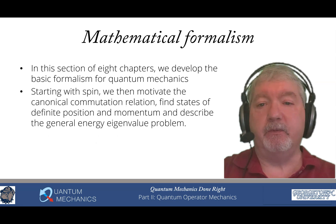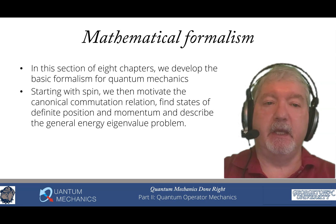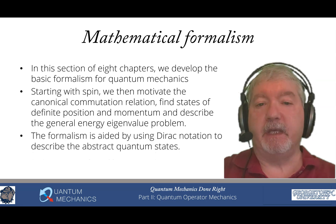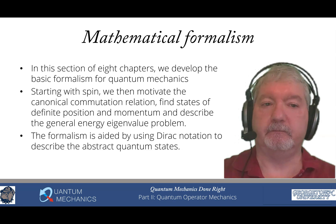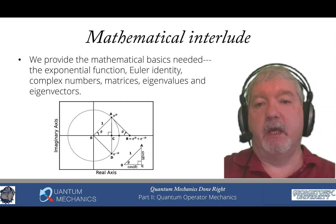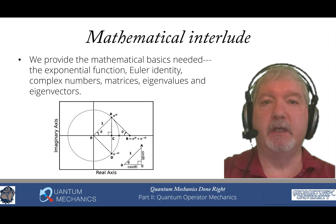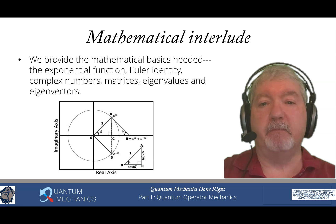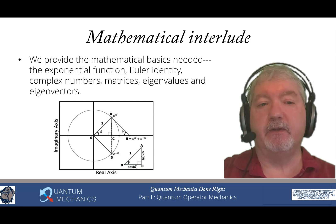Starting with spin, we then motivate the canonical commutation relation, find states of definite position and momentum, and describe the general energy eigenvalue problem. The formalism is aided by using Dirac notation to describe the abstract quantum states. The first chapter is a mathematical interlude to teach some of the basics that are needed: properties of the exponential function, the Euler identity, complex numbers, a little bit about matrices, eigenvalues and eigenvectors, and we also introduce a little bit of Dirac notation.